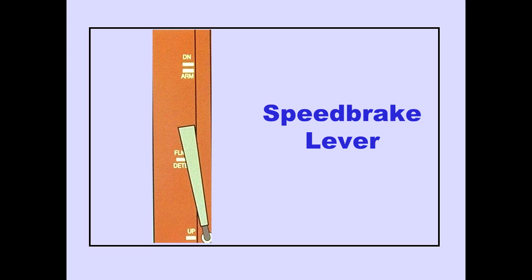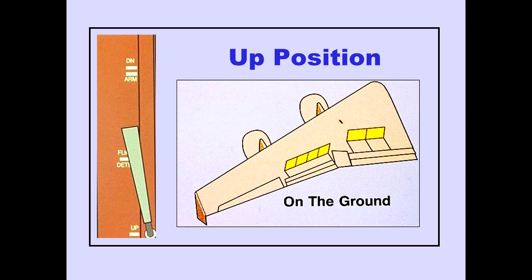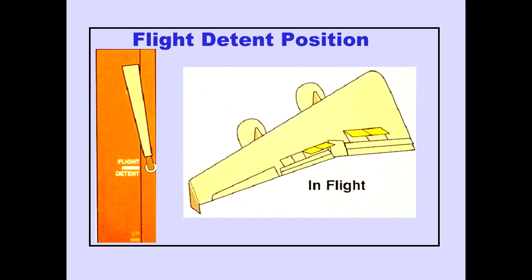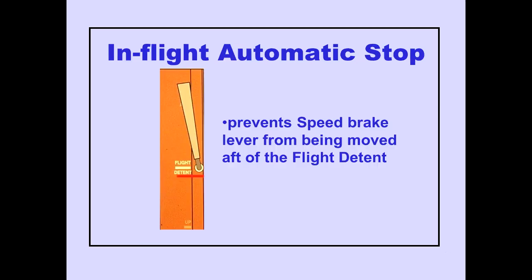The speed brake lever has four positions: up, flight detent, arm, and down. On the ground, placing the speed brake lever up extends all spoiler panels to their full up position. In flight, placing the speed brake lever to the flight detent position extends the four inboard spoiler panels on each wing to their mid-travel position. With speed brakes extended, the five outboard spoiler panels still modulate to assist in roll control. An in-flight automatic stop prevents the speed brake lever from being moved aft of the flight detent position while in flight.